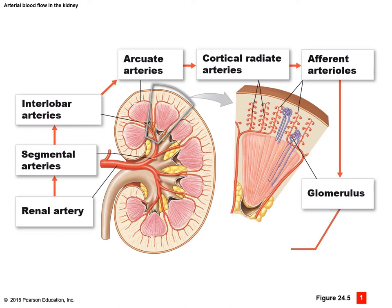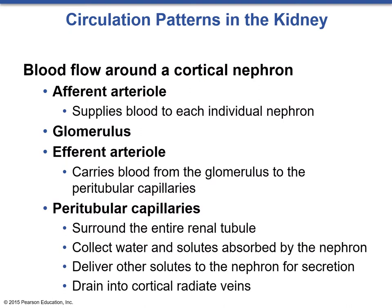You will want to know that flow chart: renal artery → segmental artery → interlobar artery → arcuate artery → corticoradiate artery → afferent arteriole → glomerulus. From the glomerulus, blood leaves via the efferent arteriole and then goes to the peritubular capillaries. The peritubular capillaries surround the entire renal tubule and collect water and solutes absorbed by the nephron, delivering solutes to the nephron for secretion, and drain into the corticoradiate veins. This represents a portal system: the afferent arteriole is the artery, the glomerulus is the first capillary set, and the efferent arteriole is the portal vessel extending to the second capillary network.